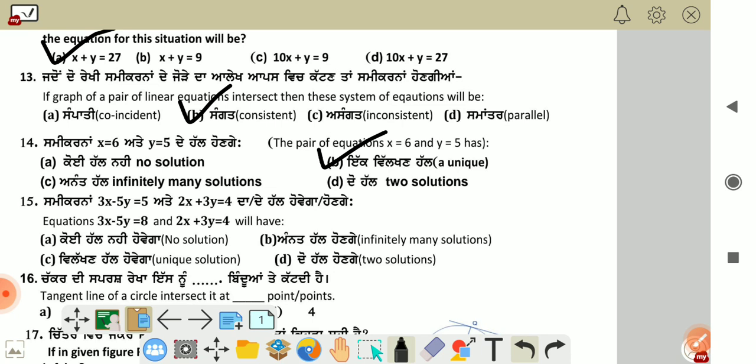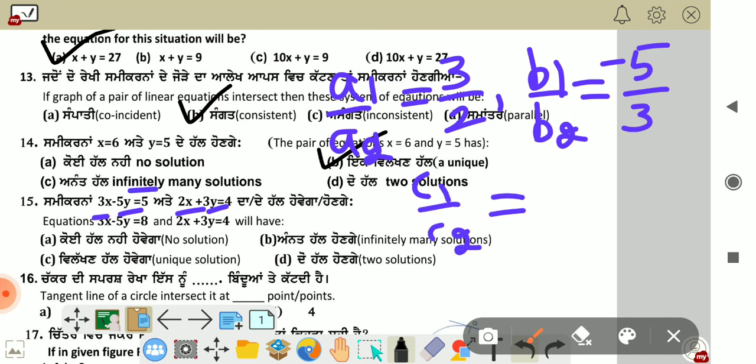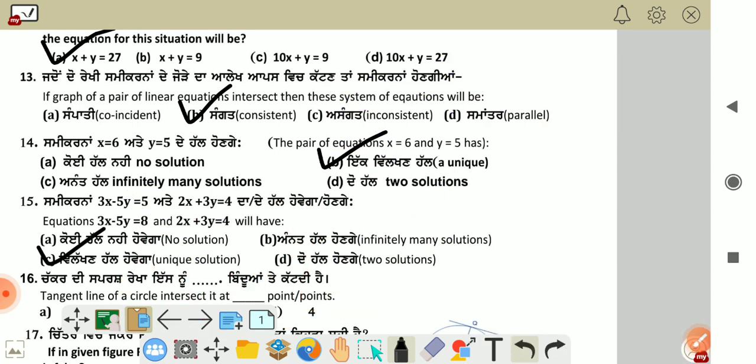The equations will have - let's find the ratios. a1 by a2 is 3 by 2, b1 by b2 is minus 5 by 3, c1 by c2 is 5 by 4. See, the first two are not equal. Means a1 by a2 is not equal to b1 by b2. So it has unique solutions. See, the answer is C option.